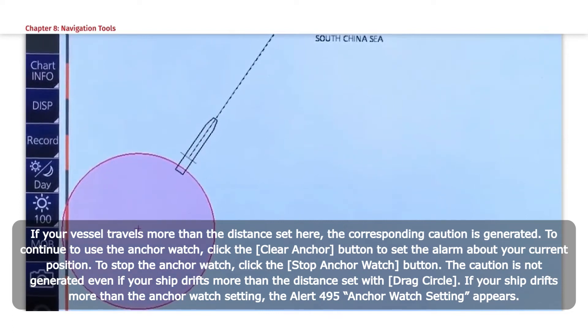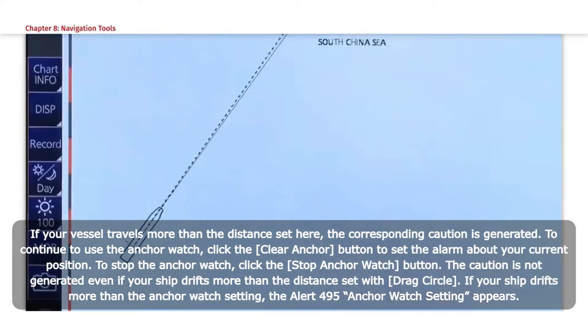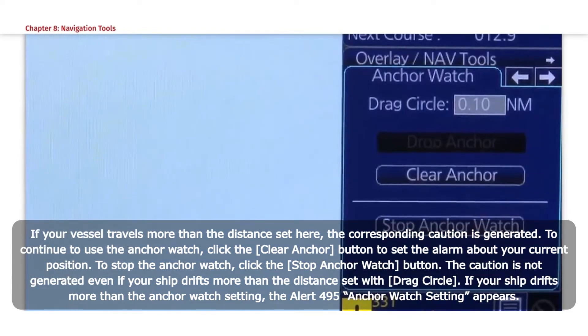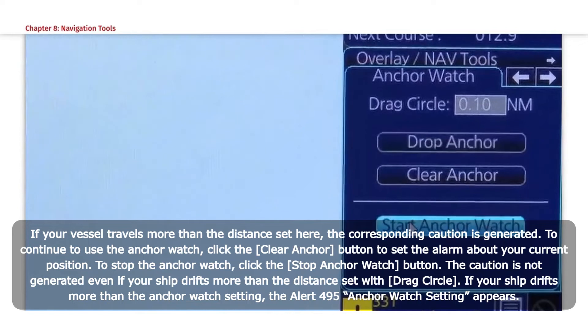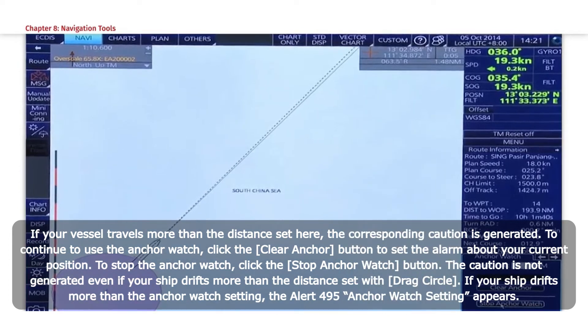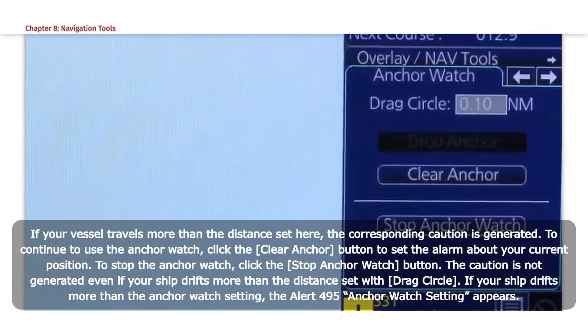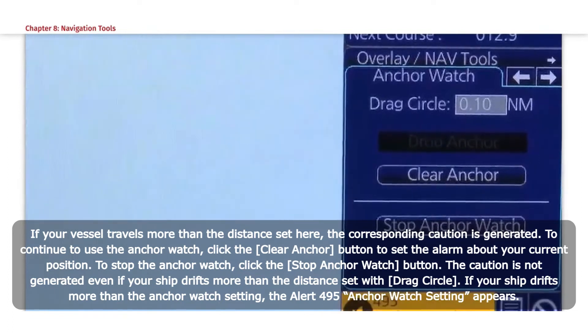If your vessel travels more than the distance set here, the corresponding caution is generated. To continue to use the anchor watch, click the Clear Anchor button to set the alarm about your current position. To stop the anchor watch, click the Stop Anchor Watch button. The caution is not generated if your ship drifts more than the distance set with Drag Circle. If your ship drifts more than the anchor watch setting, the Alert 495 Anchor Watch setting appears.